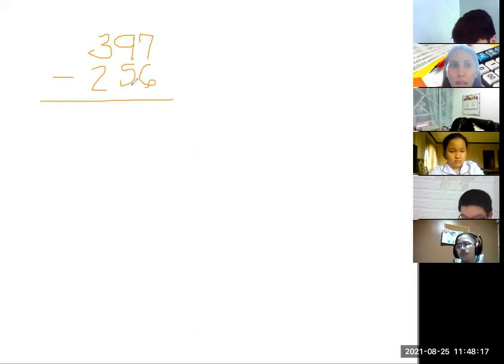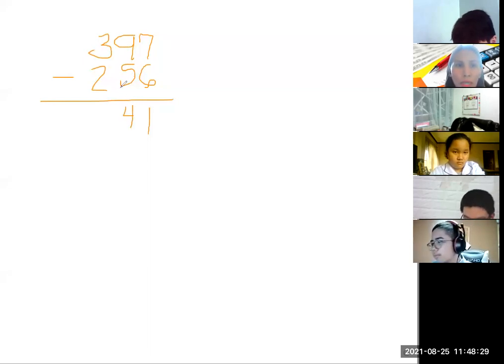Let's subtract 256 from 397. 7 minus 6 we have 1, 9 minus 5 is 4, and 3 minus 2 is 1. We have 141.